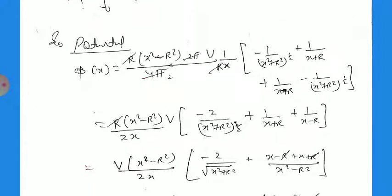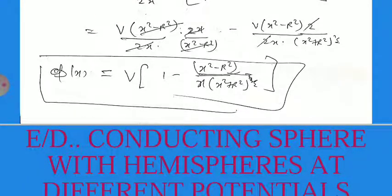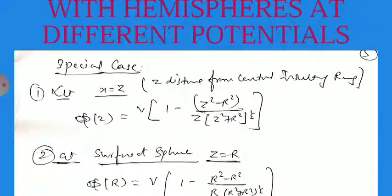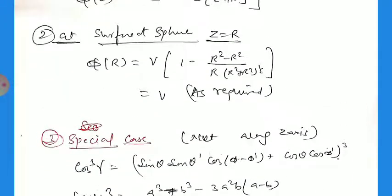Combining everything, the potential along the z-axis is: φ(x) = V [ 1 − (x² + R²) / (x √(x² + R²)) ]. Since the observation point is on the z-axis, x = z, so φ(z) = V [ 1 − (z² + R²) / (z √(z² + R²)) ]. As a check, at the surface of the sphere where z = R: φ(R) = V, and the remaining terms cancel to zero, confirming the boundary condition.